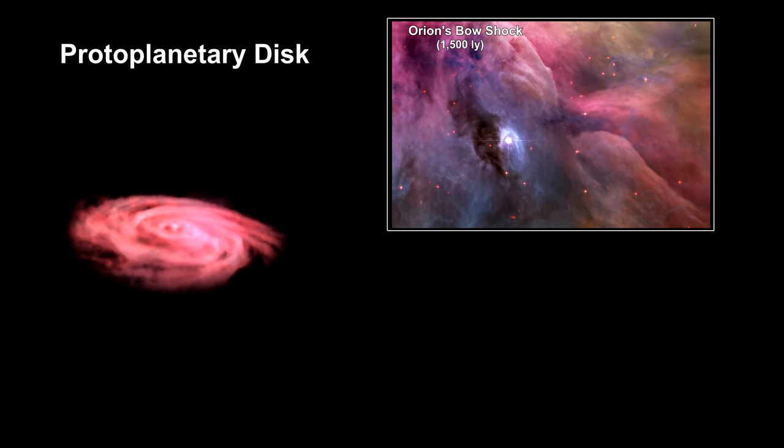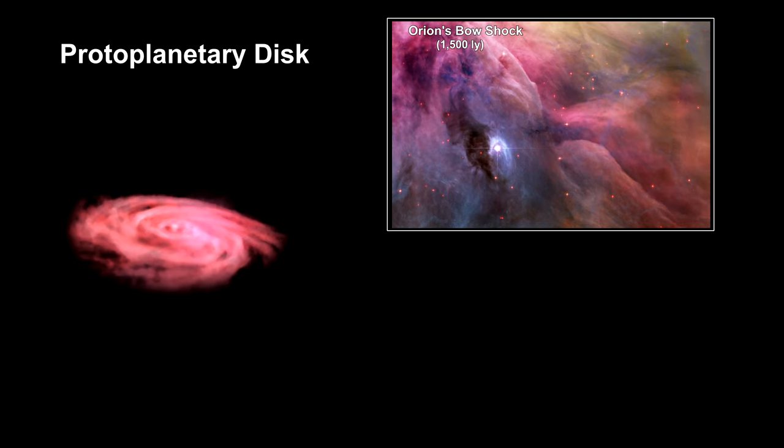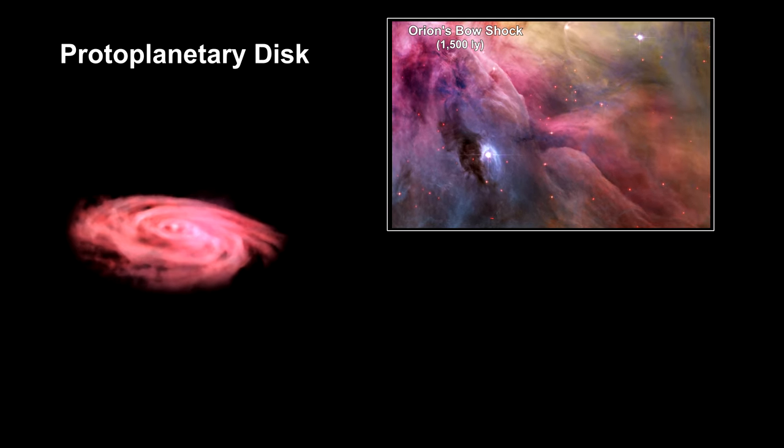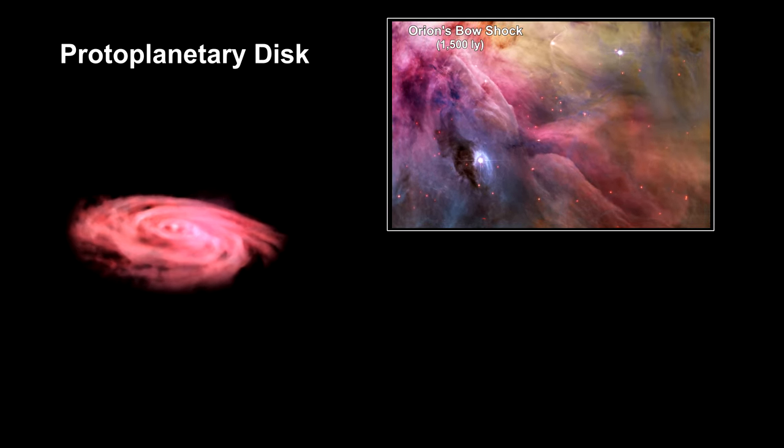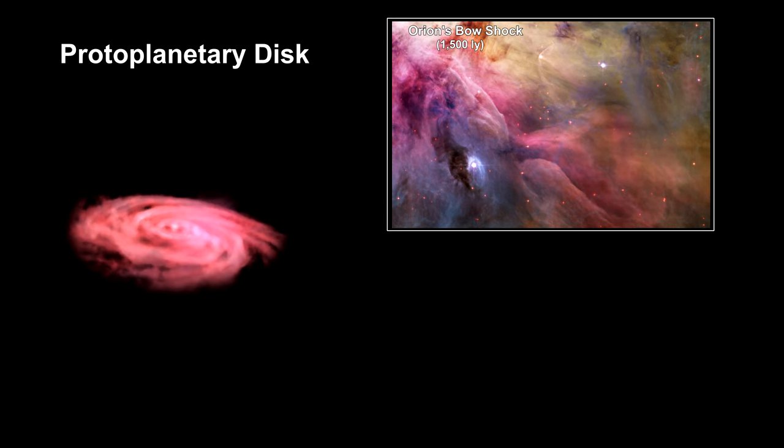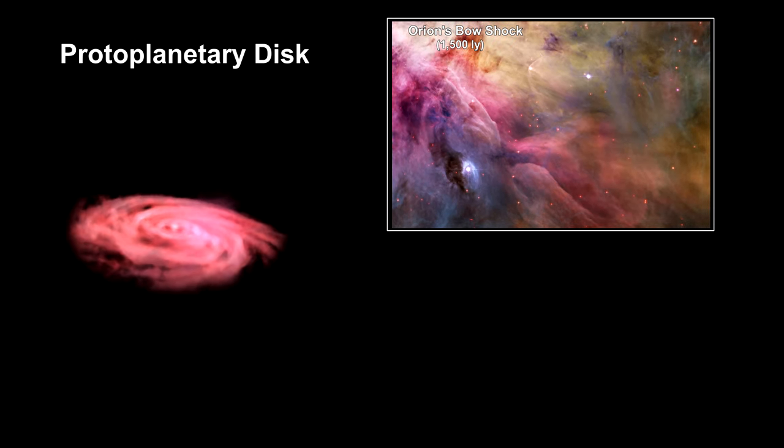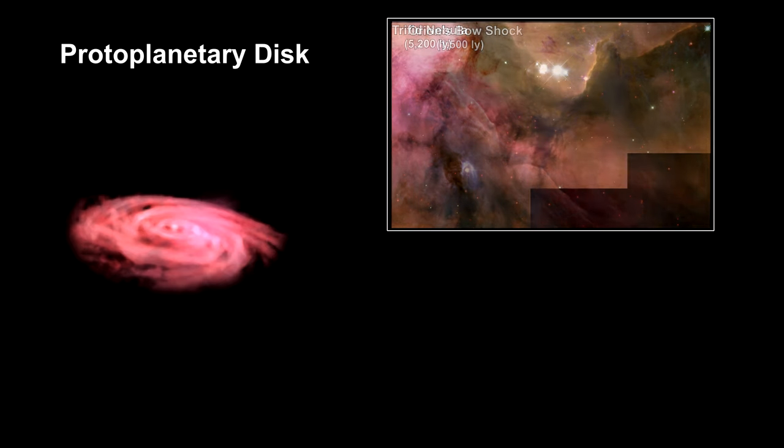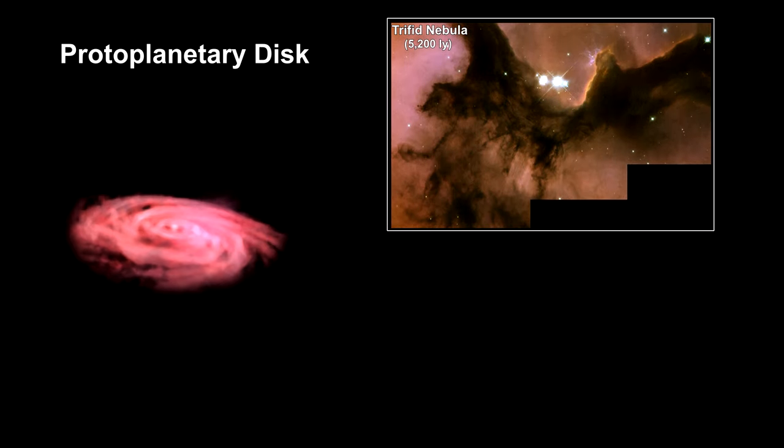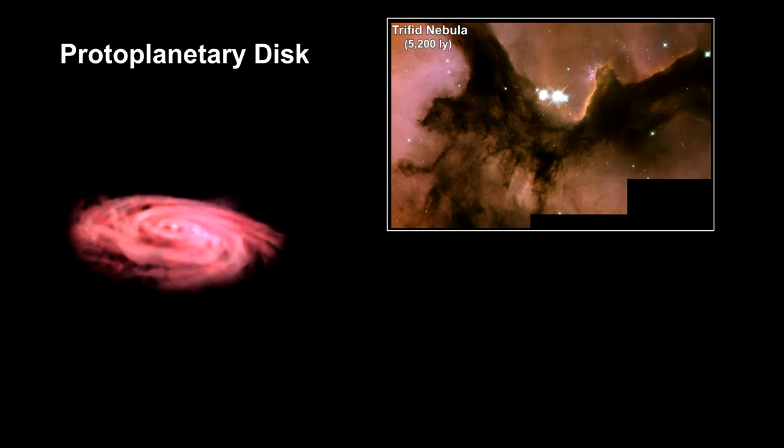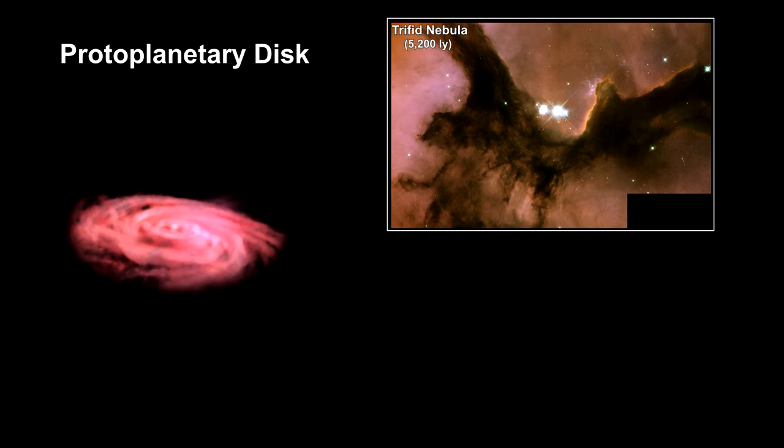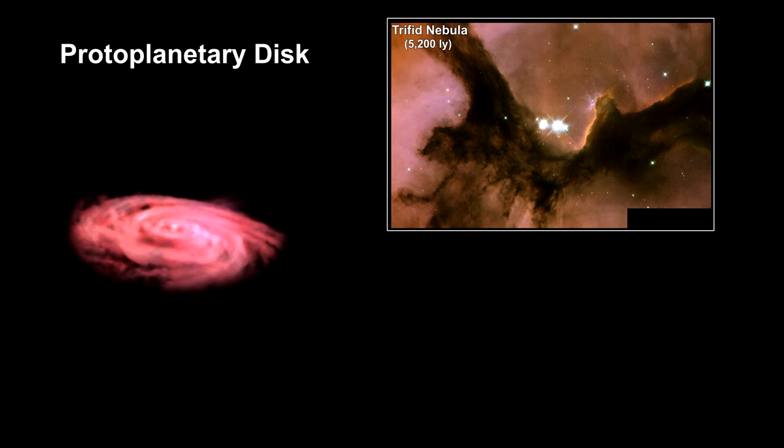Dust is the only solid grains available for growing planets. Dust itself cannot be formed directly from purely gaseous material at the low densities found in interstellar molecular clouds. Instead, solid grains are known to form in planetary nebulae, supernovae, and in the outer atmospheres of cool supergiant stars.